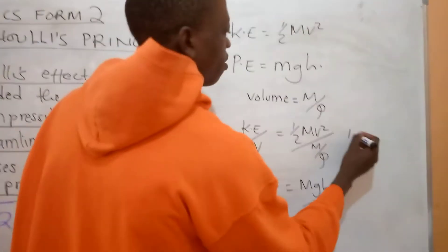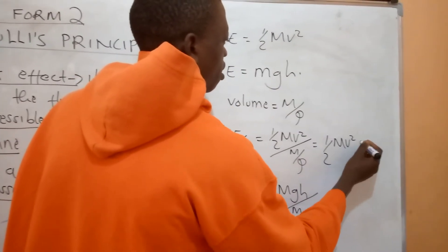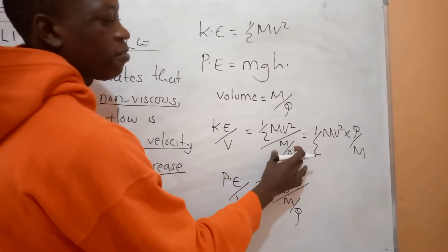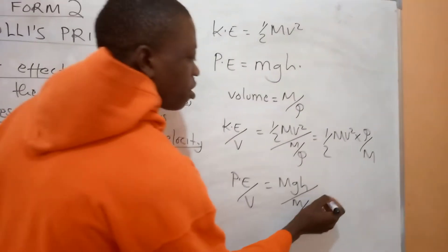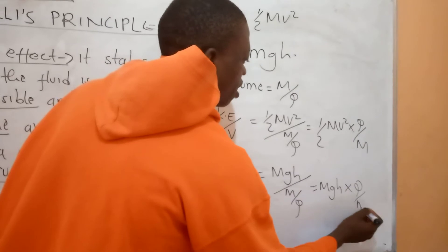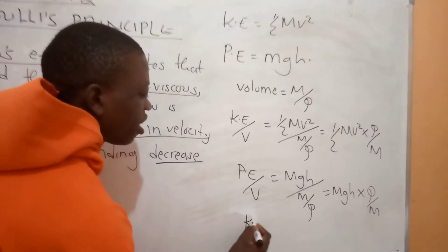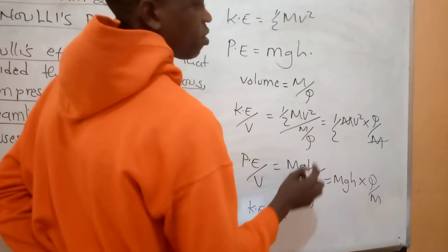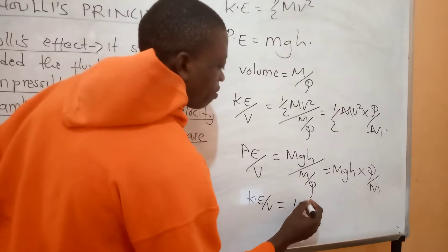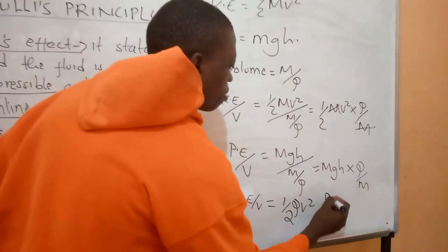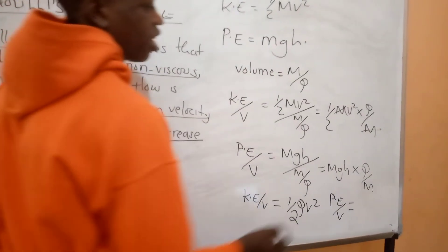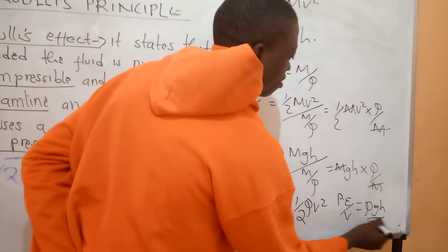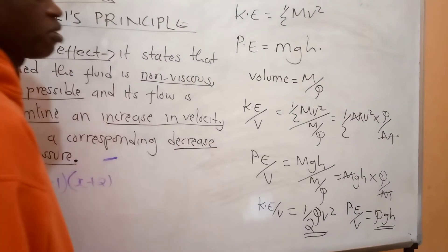Kinetic energy per unit volume: I take one-half mv squared multiplied by rho over m. When you divide a number by a fraction, you multiply by its reciprocal. Cancelling m with m, I get one-half rho v squared. For potential energy per unit volume, I take mgh multiplied by rho over m, cancel m with m, and I remain with rho gh.